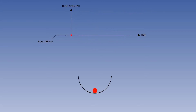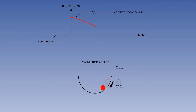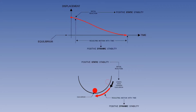Let's reset the graph and reintroduce the ball in the bowl. Displacement takes place, the disturbing force is removed, and an initial return towards equilibrium begins. Over a period of time, a return to equilibrium takes place. We have an illustration of positive static and positive dynamic stability.